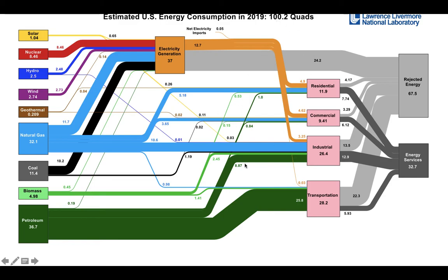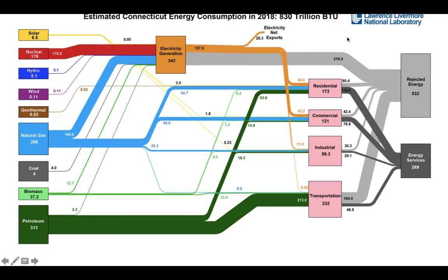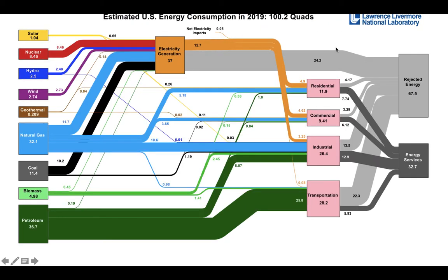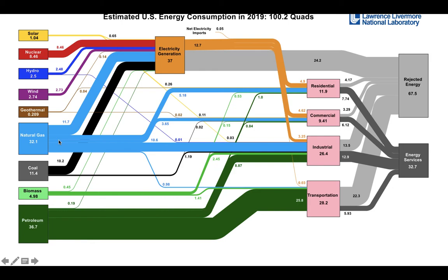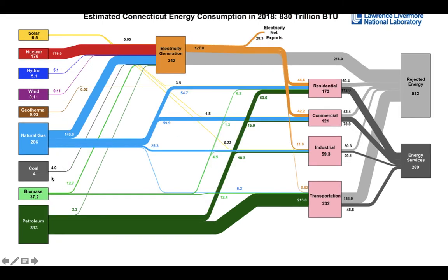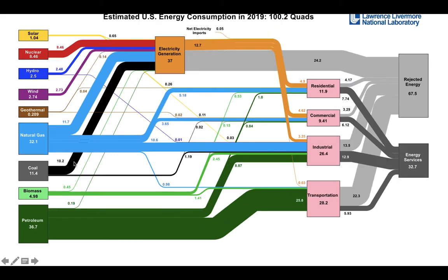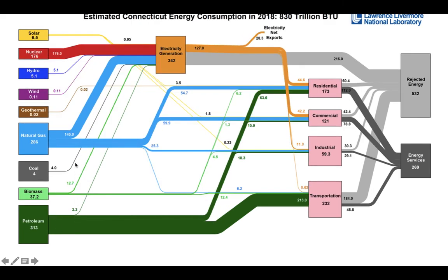Comparing Connecticut's 2018 energy data to the national picture shows significant differences. Nuclear plays a much bigger role in Connecticut, while wind and hydroelectric play much smaller roles. Natural gas and coal play smaller roles as well — coal in Connecticut is dramatically less than the national average. Solar is roughly the same. Different states show very different energy patterns, and we'll be investigating Connecticut's specifically in depth.